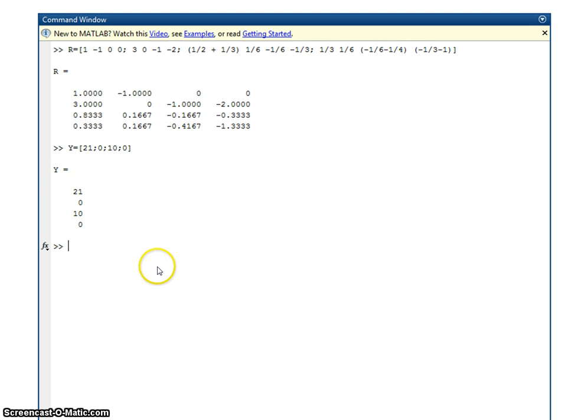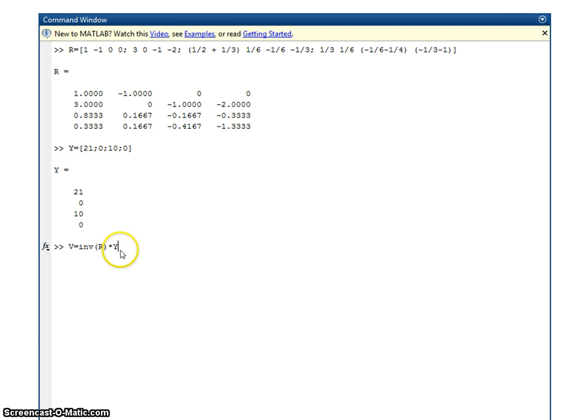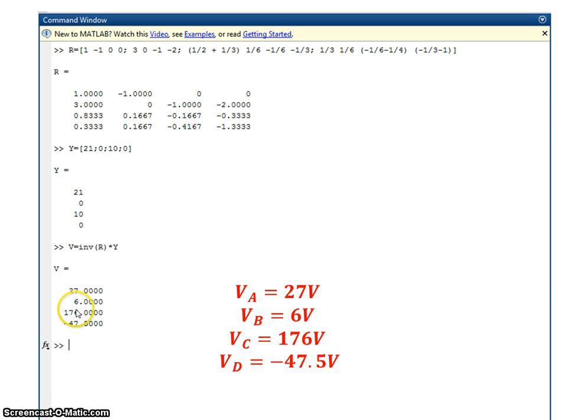Now, the voltage is equal to inverse of this matrix R times Y. So let's do that. V is inverse R times Y. We get V equals 27, 6, 176 and minus 47.5. This 27 is VA, 6 is VB, 176 is VC, and minus 47.5 is VD.